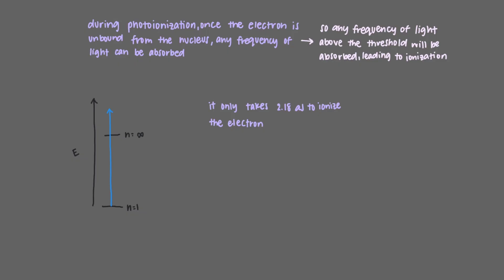But it only takes 2.18 times 10^-18 joules to ionize the electron. So what happens to the rest of the energy? The electron takes this energy as it leaves the atom and flies away even faster. This becomes additional kinetic energy of the electron.